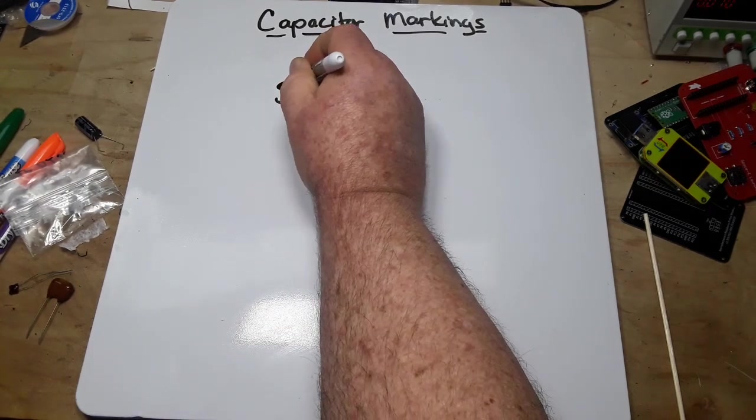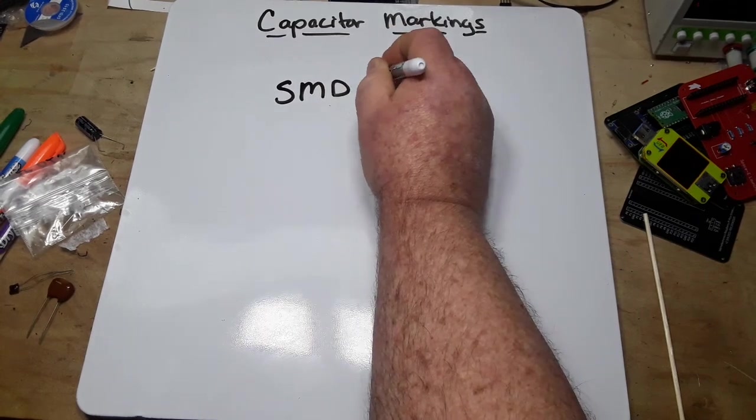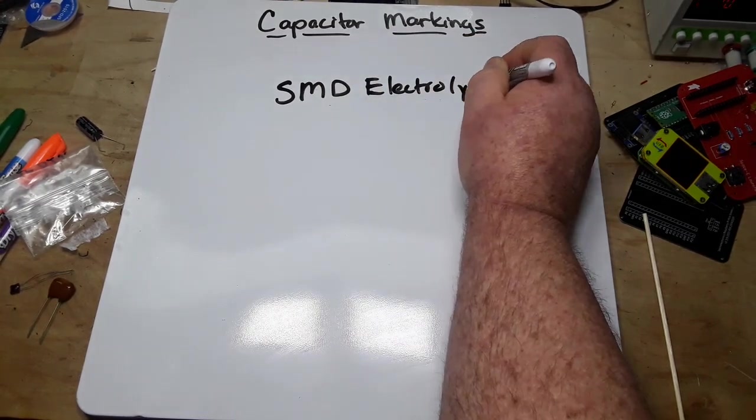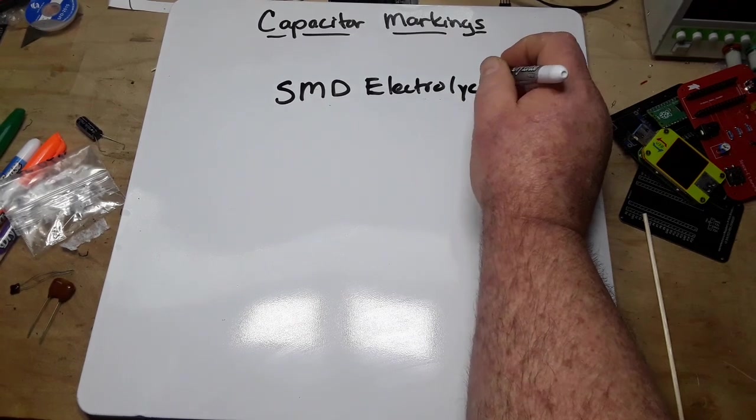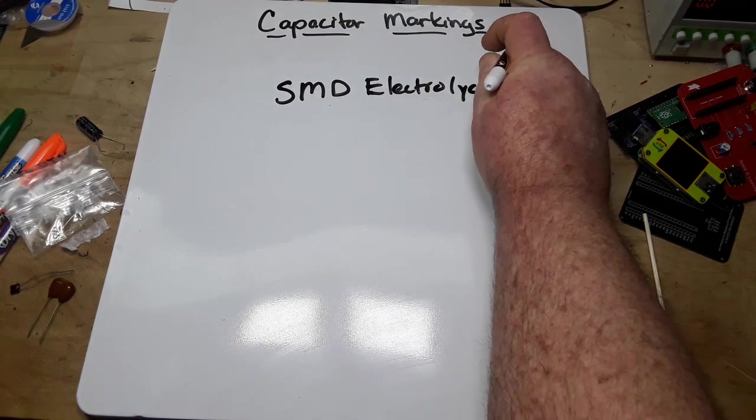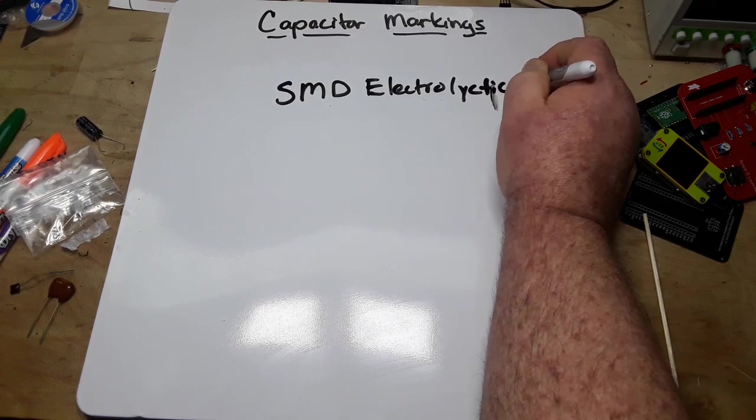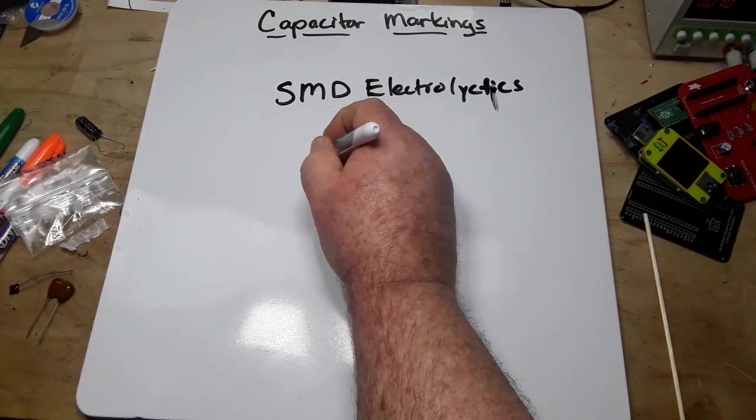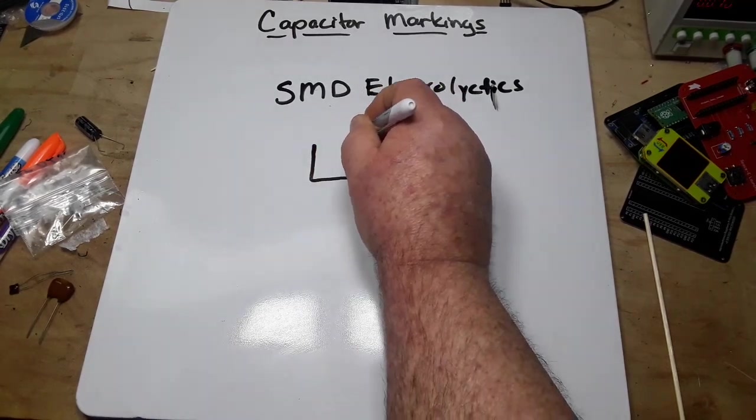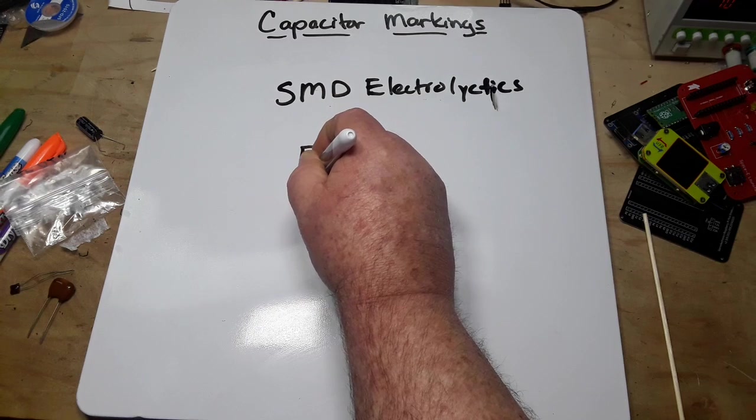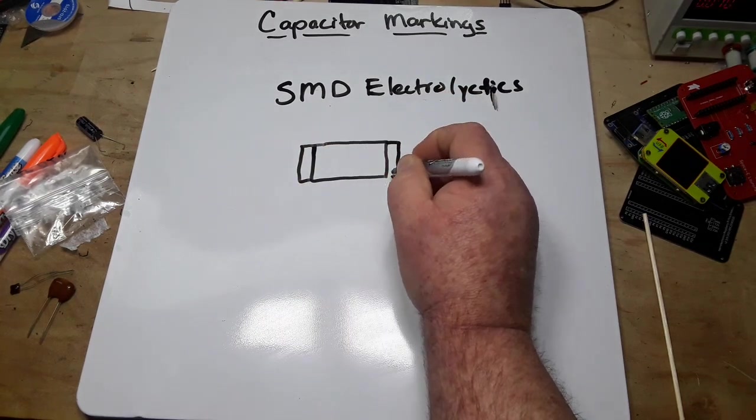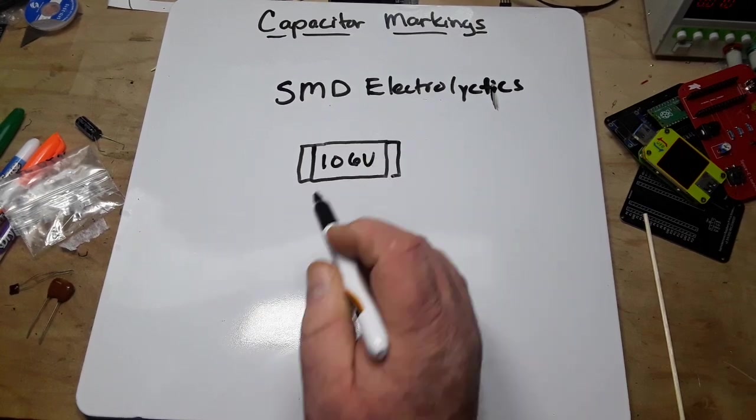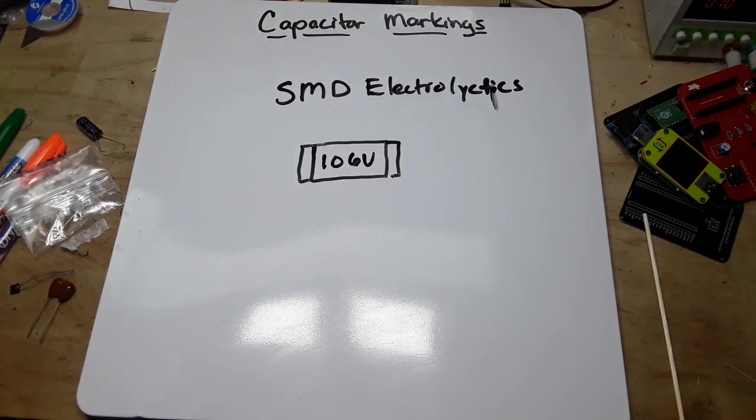And that is SMD electrolytics. They are really strange. They look like your standard SMD capacitor, but they have markings like this: 10V.